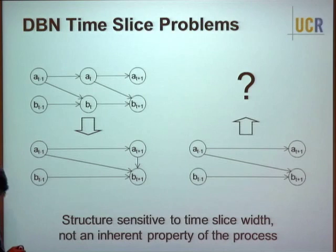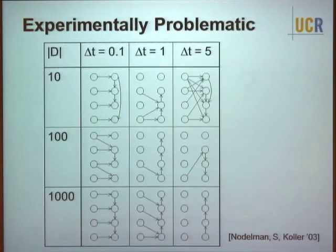The basic point is not that something is necessarily wrong, but that your structure is sensitive to your time slice width. If the time slice width is inherent to the process, that's fine. But if not, your estimated structure is not some inherent property of the process.